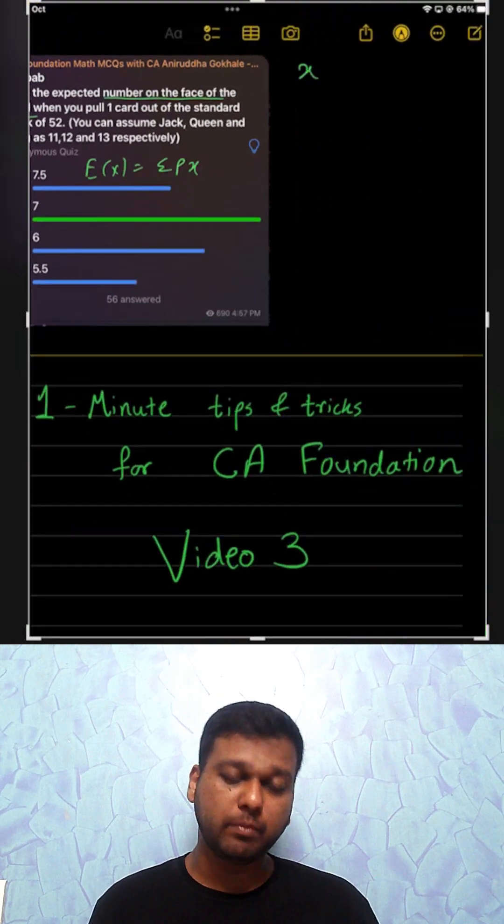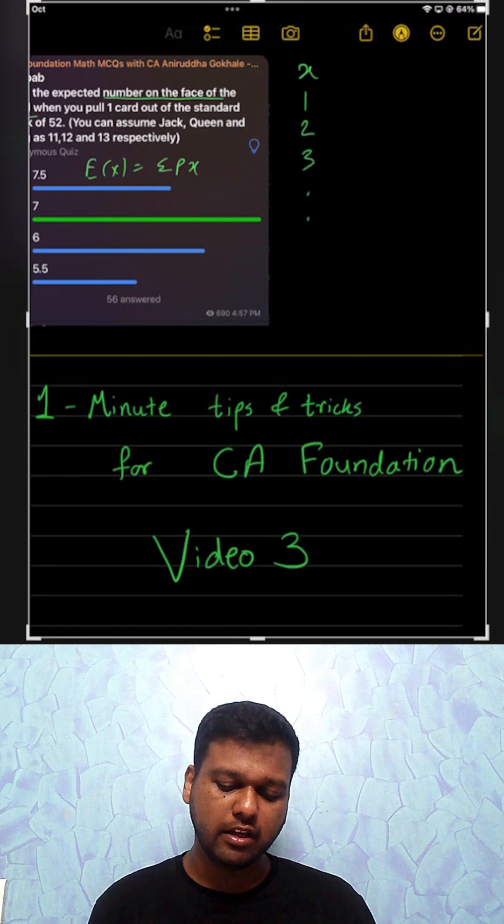That means x has to be number on face of card which is ace, 2, 3, up to king.